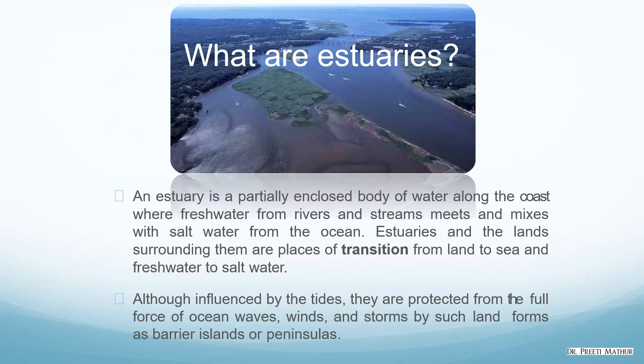The next type was Bar-Built Estuaries, in which a shallow lagoon or bay is protected from the ocean by a sandbar or barrier island projecting into the sea. And there are also Fjords, or U-shaped valleys — that was the fourth type. So these were the four types covered in my last lecture.